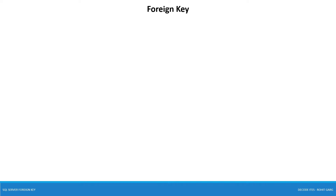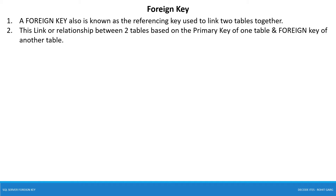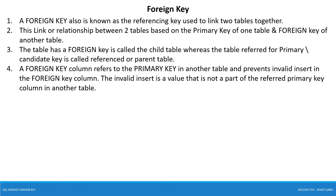What are the characteristics of foreign key and what is foreign key? A foreign key, also known as a referencing key, is used to link two tables together. A link or relationship between two tables is based on the primary key of one table and the foreign key of another table. The table that has the foreign key is called the child table, whereas the table referred to for the primary or candidate key is called the reference or parent table. A foreign key column refers to the primary key in another table and prevents invalid inserts in the foreign key column. The invalid insert is a value that is not part of the referred primary key column in another table — that means you can't insert any value which is not present in the primary key referred column or parent column.